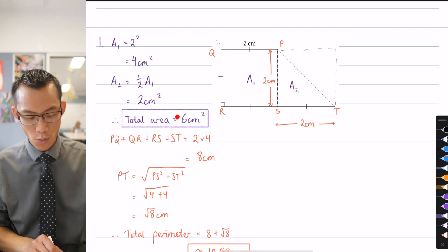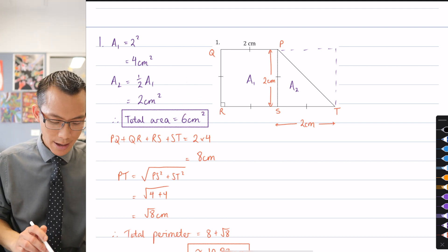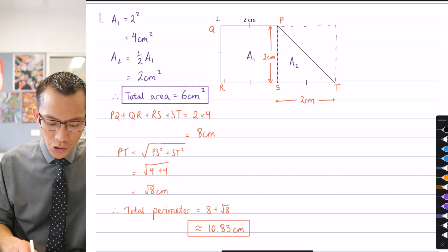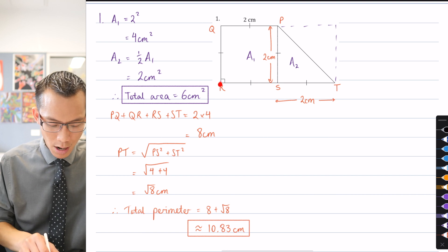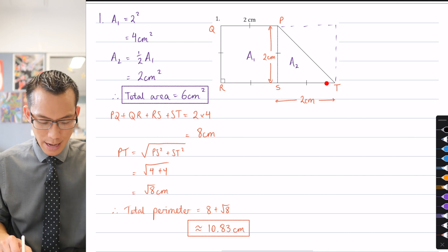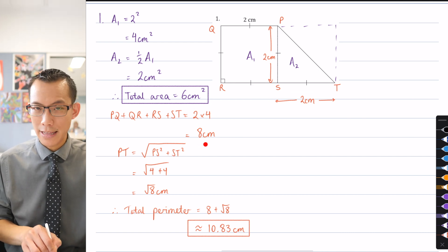And you can see, by the way, through my working, I've done all the areas in purple and all of the perimeters in orange, just so it's a bit easier to distinguish. Then when you go around, the same lengths that I mentioned here before, PQ, QR, RS, and ST, all of them are two centimeters in length. So I just multiply that by four to get the eight.